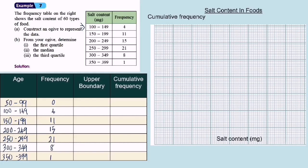Still remember how to find upper boundary. To find upper boundary of the first class interval, we look at the upper limit here, 99. After 99 is 100, so the upper boundary is the number between 99 and 100, which is 99.5. Next is 149.5, 199.5, 249.5, 299.5, 349.5, 399.5.